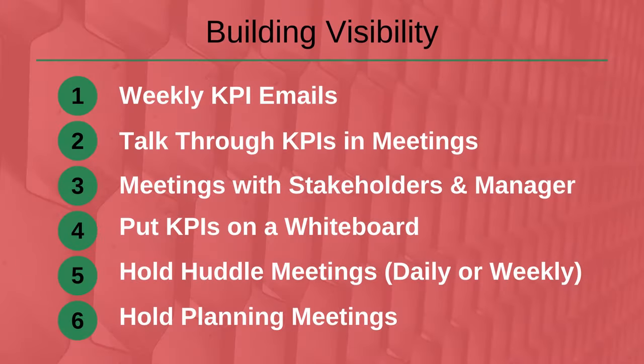First, send around a weekly KPI email to team members and stakeholders. Second, talk about the KPIs in team meetings and in one-on-one meetings. Third, meet to go through KPIs with stakeholders and your manager. Fourth, put the KPIs on a whiteboard in full view of the team or use a TV screen. Fifth, hold huddle meetings each day or week and get team members to update the KPI they own on a scoreboard. And sixth, hold planning meetings to work out how to improve the results the KPIs are tracking.